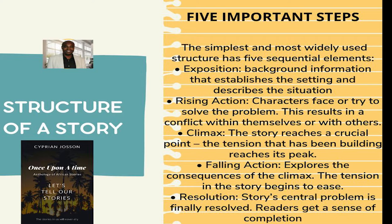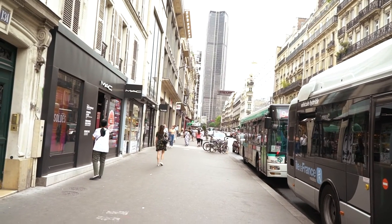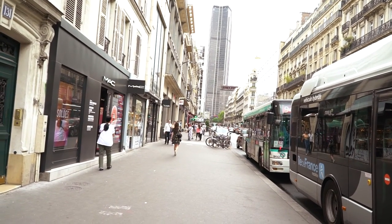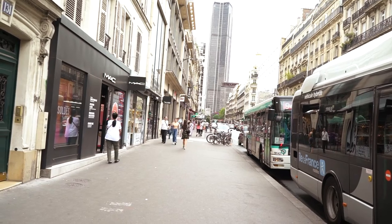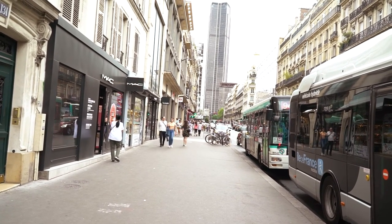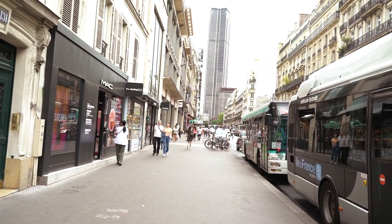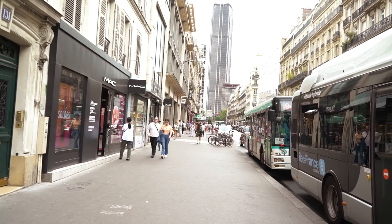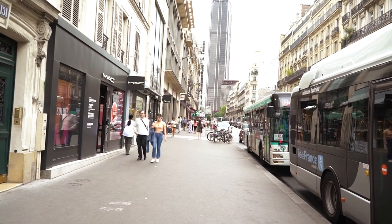The simplest and most widely used structure has five elements. First, exposition — background information that establishes the setting and describes the situation. That means you might set your novel in your village, in a city, or anywhere you like. That's where the novel or story starts.